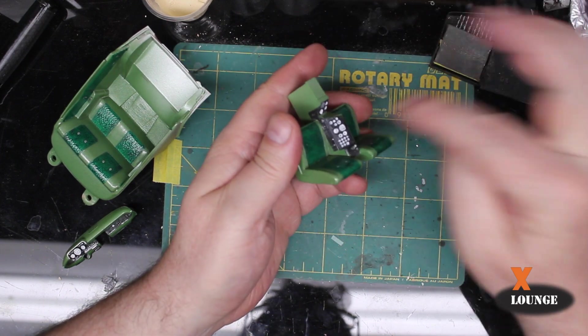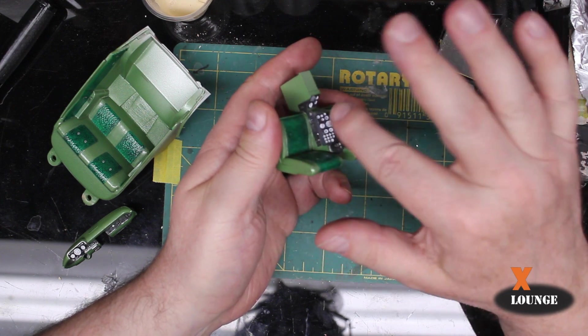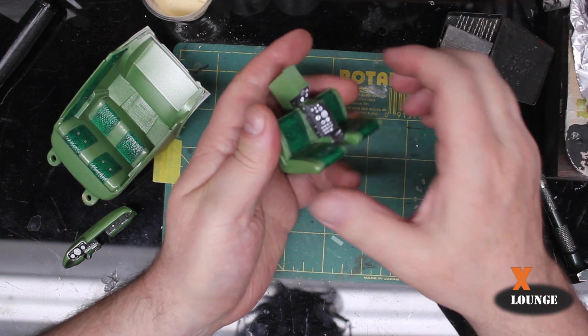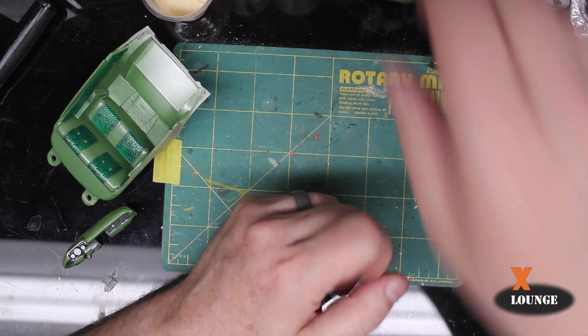What we are going to do is mix some of it up, and we are going to dot it on the white portions, the gauge faces, and it is going to create a dome. And then when it dries, it is going to look like gauge faces.